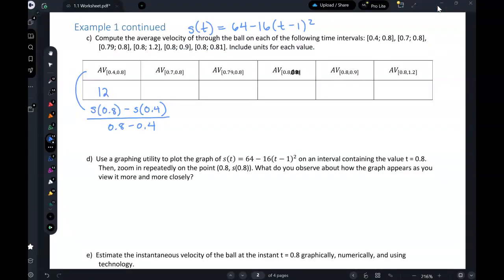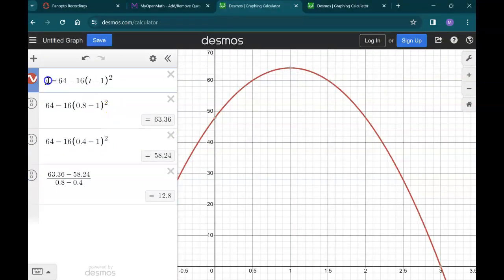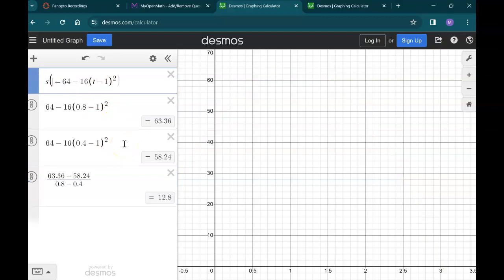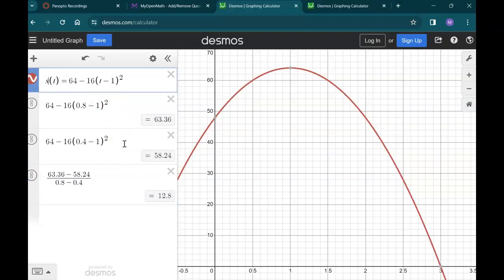I'm going to show you some even nicer tricks for getting Desmos to do this for you. Desmos actually understands function notation. And it's pretty good about using most variables. But if you're having some trouble, you can default back to f for a function name, x for your input variable. So it's clearly fine with s and t. If we were going to do that same calculation, we type in s(0.8) and there's that same 63.36. We could type in s(0.4) and get that same 58.24.